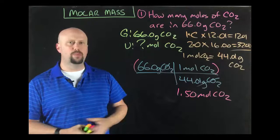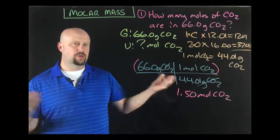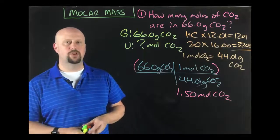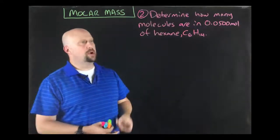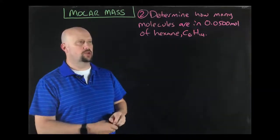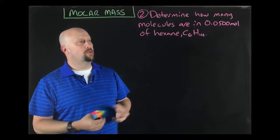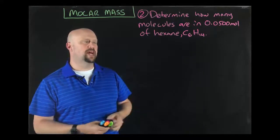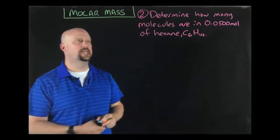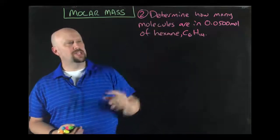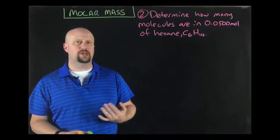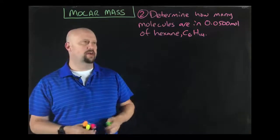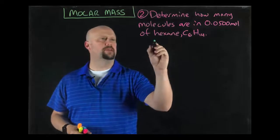All right, let's work one more. Then we'll know what we need to know to be able to do molar mass calculations along with Avogadro's number stuff. Problem number two, determine how many molecules are in 0.0500 moles of hexane. This is the formula for hexane, C6H14. And so we see the word molecules. And when you see molecules, that should sort of immediately be your hint that, hey, I need Avogadro's number. So I'm going to go ahead and write that.